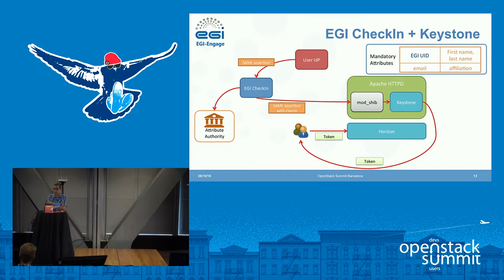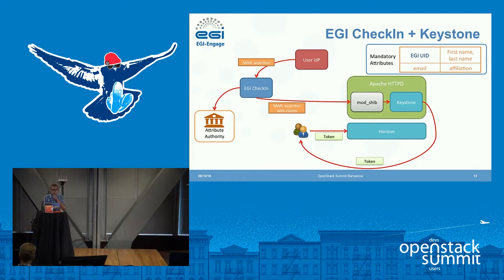The IdP returns a SAML assertion, and EGI Check-in can contact the attribute authority to get additional group membership information. EGI Check-in then creates a new extended SAML assertion with claims stating which groups the user belongs to, and this is passed back through Apache to Keystone, which generates a token used to access Horizon. We currently deliver at minimum: a unique identifier for every user, first name, last name, email, affiliation, and the authorization claims about group membership.